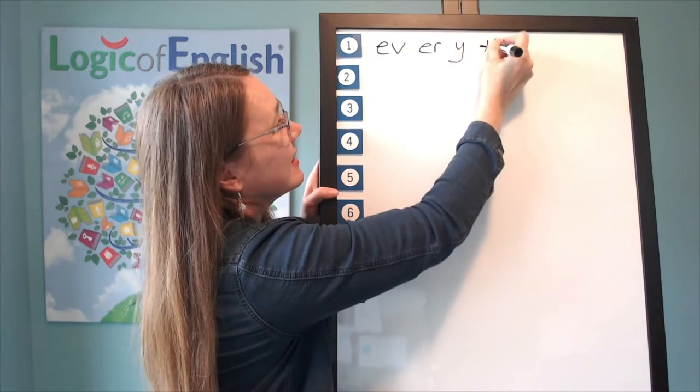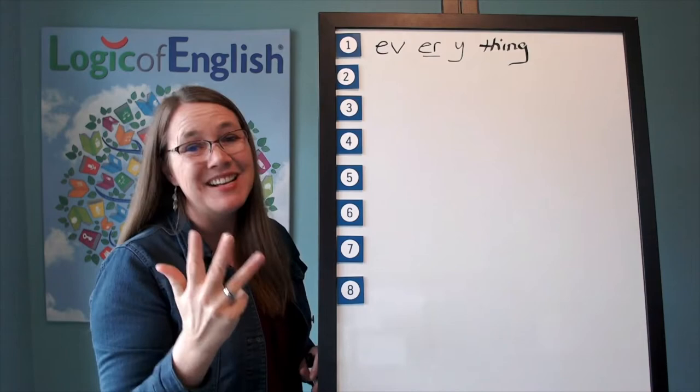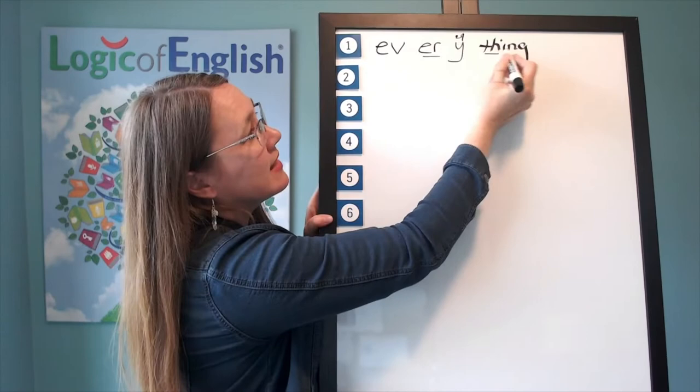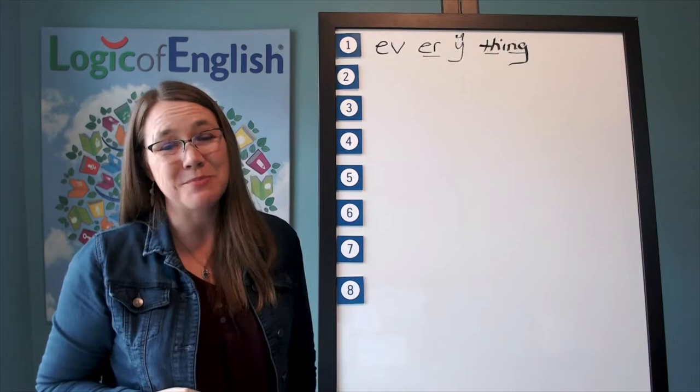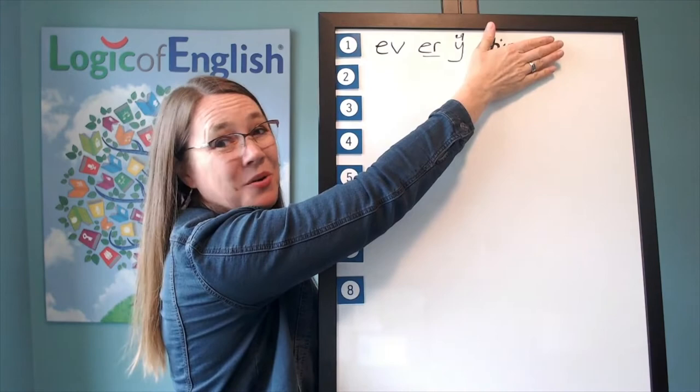The fourth syllable is thing, th, i, n. And how will we mark it? We'll underline the er. And what sound of y, i, e did you hear in everything? That's right, the fourth sound. We'll underline the th and we'll underline the n. Now what two words do you see make up everything? That's right. We have every and thing. It's a compound word between every and thing.